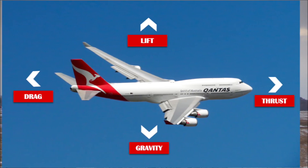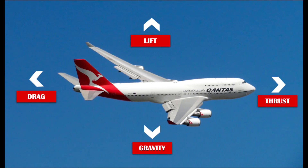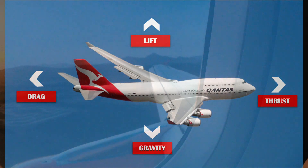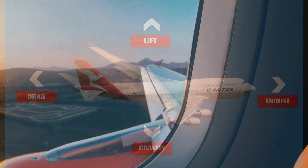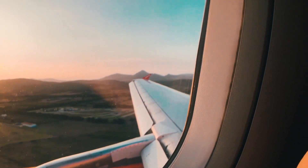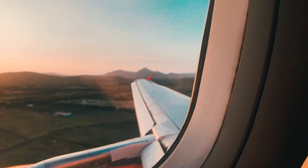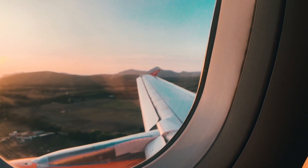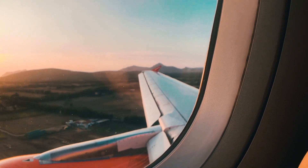So at any given point, all these four forces are working together to either lift the plane or just balancing out each other to ensure a smooth flight. The movement of wings is evident during takeoff and landing, and sometimes you might even be able to see the direction of the airflow.